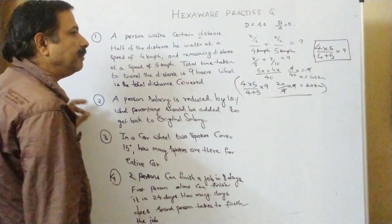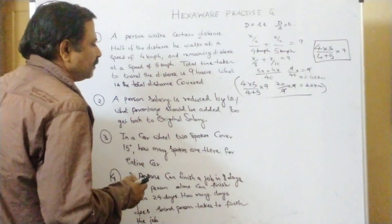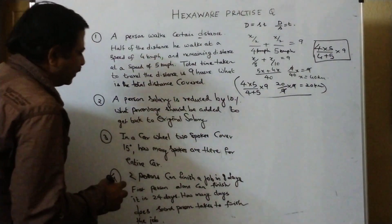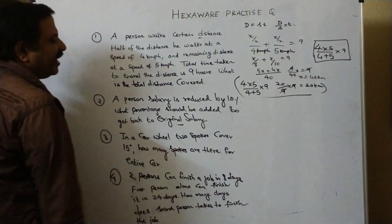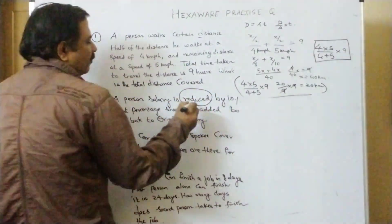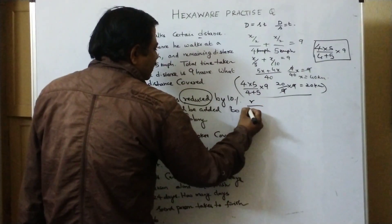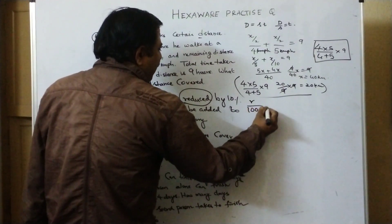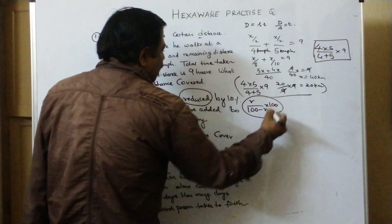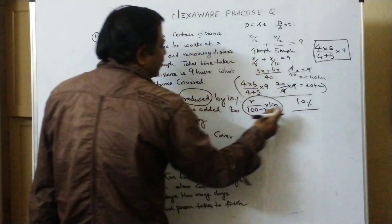Let us see the second question. A person's salary is reduced by 10%. By what percentage should be added to get back to the original salary? Whenever you see reduced, we use R by 100 minus R into 100. This is the formula.